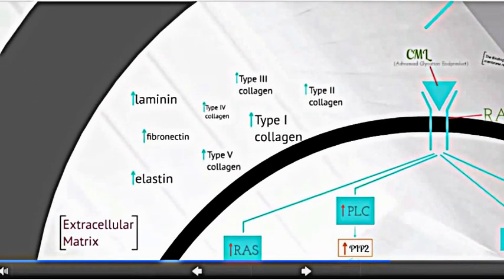AGEs in the extracellular matrix form cross-links with other proteins, which trap other molecules that causes vascular stiffness and permanent dysfunction in cell growth and secretory functions.